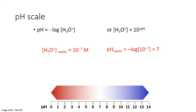pH is simply a measure of the concentration of hydronium ion, H3O+, in solution. The formula for pH is the negative log of this ion concentration. The negative log makes this an inverse scale, so the lower the pH value, the higher the concentration of hydronium ion and the more acidic the solution. To calculate pH for any solution, we just need to know what the concentration of the hydronium ion is going to be at equilibrium.